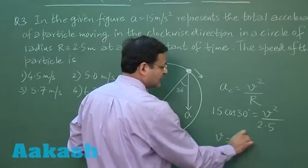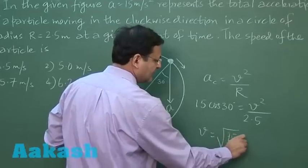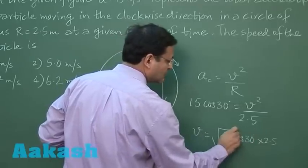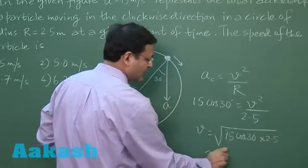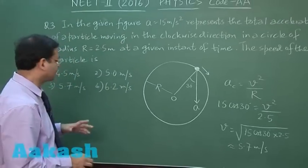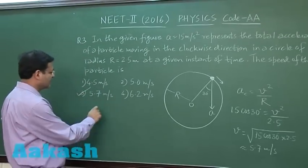So v value, if you will calculate, this will be the square root of 15 cos 30 into 2.5. So approximately you can say 5.7 meter per second will be the value you will be getting for this. So for that matter, you will be marking answer 3 for this - 5.7 meter per second.